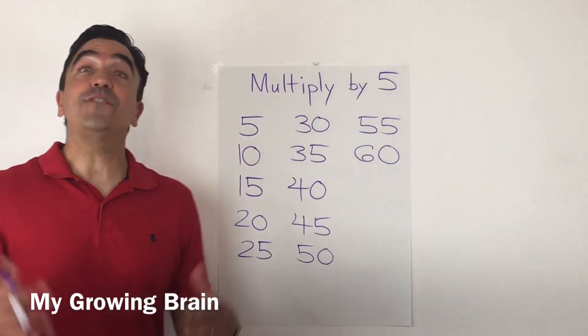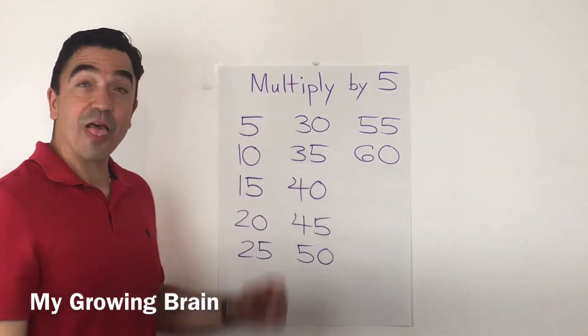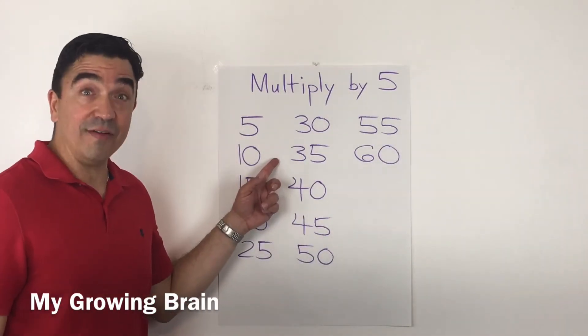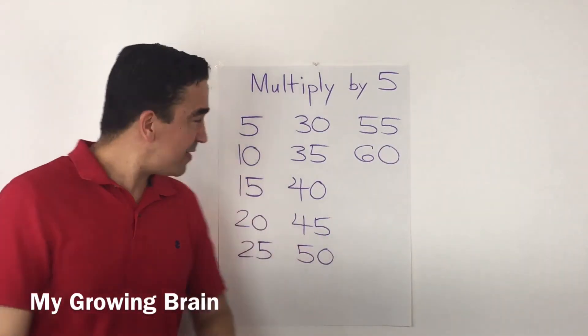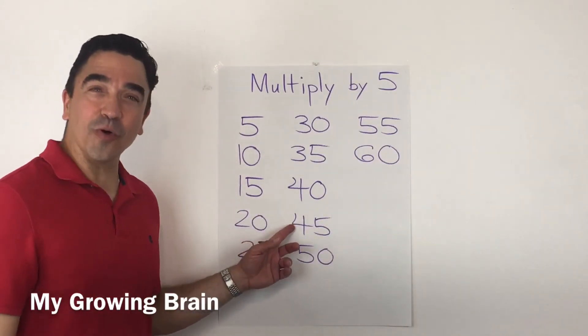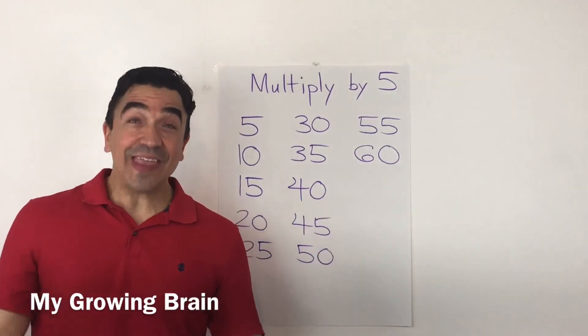5 times 6 is 30. 5 times 7 is 35. 5 times 8 is 40. 5 times 9 is 45. 5 times 10 is 50.